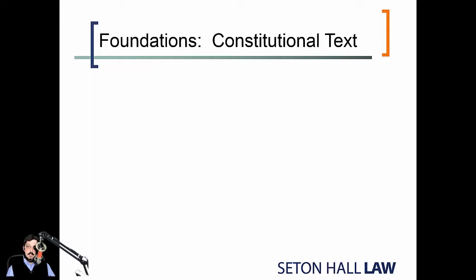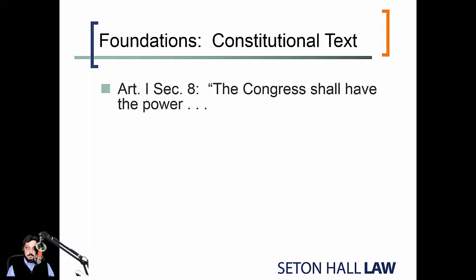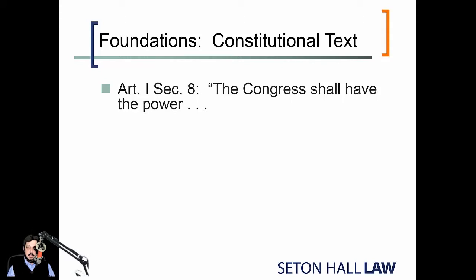The first piece that we look at here is Article I. Article I lays out the legislative power. Article II lays out the executive power. Article III lays out the judicial power, and there we have our separation of powers. Within Article I, Section VIII are the enumerated powers of Congress.